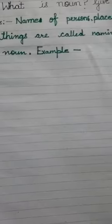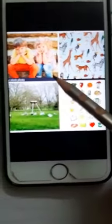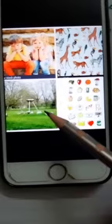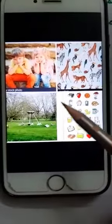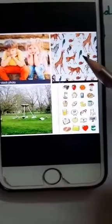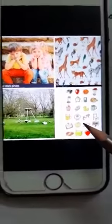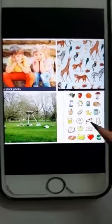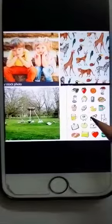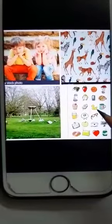Look here, look at this picture. Here are names of persons: girl, boy. They are persons. Then places, here is park. Then animals and birds, and here things. Look at this picture. So, noun is a name of persons, places, animals, birds, and things.